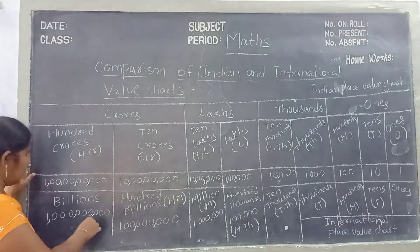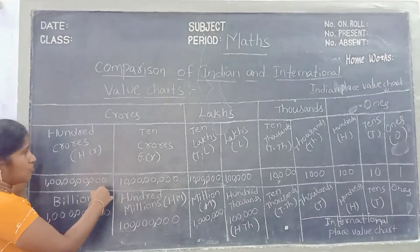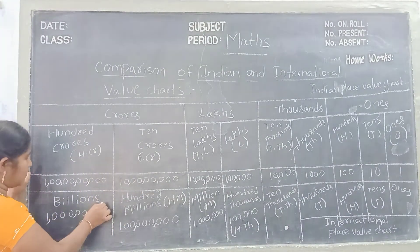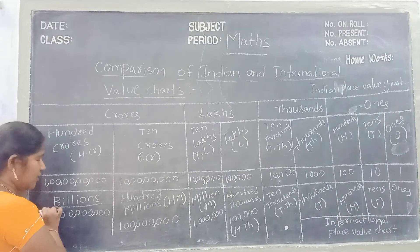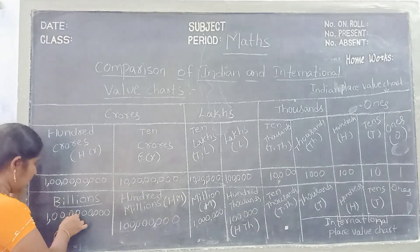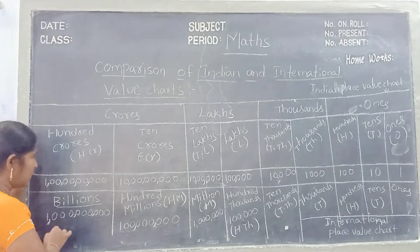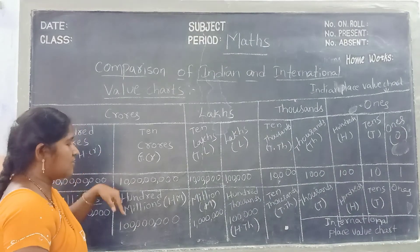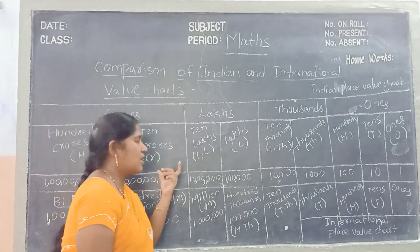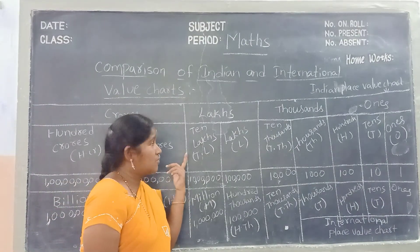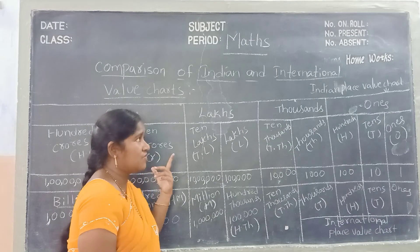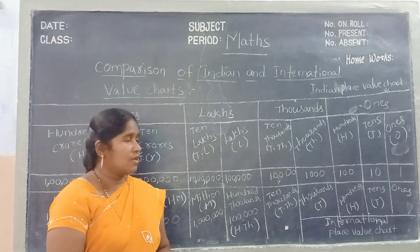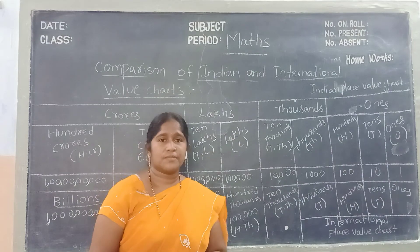And next, see children — in the Indian place value chart, crores; in the international place value chart, billions. Observe children how I am keeping commas in Indian place value chart and international place value chart. Okay children, this is today's class. Thank you.